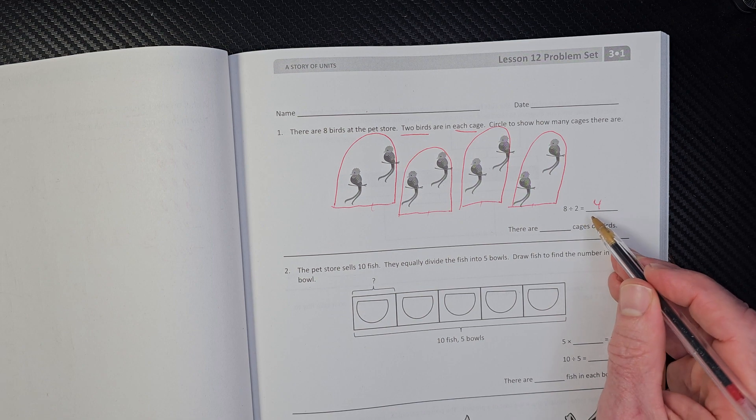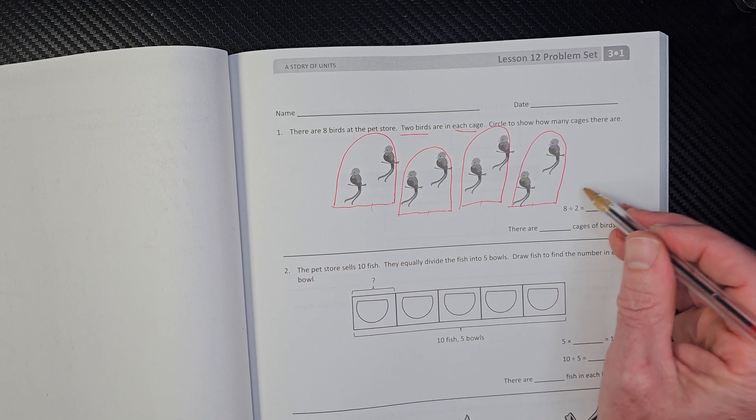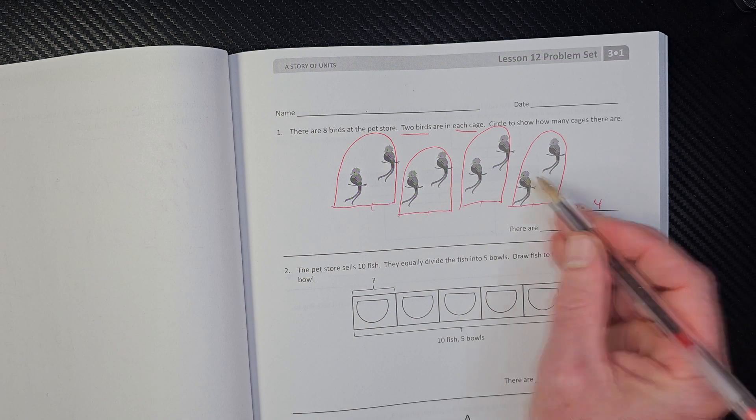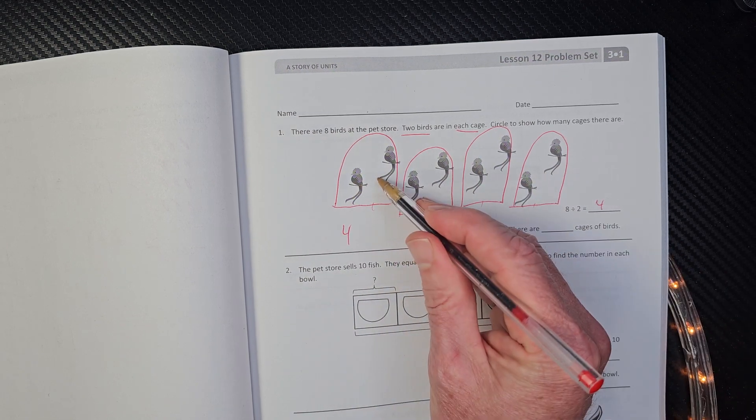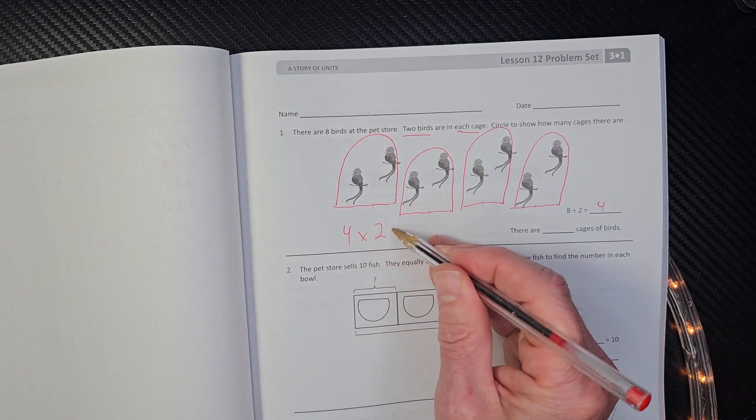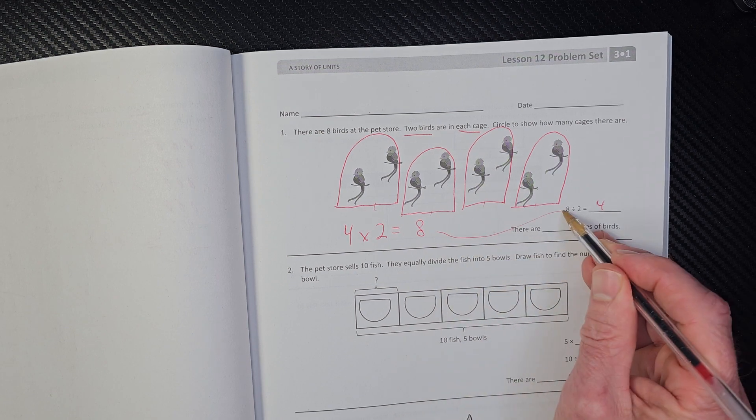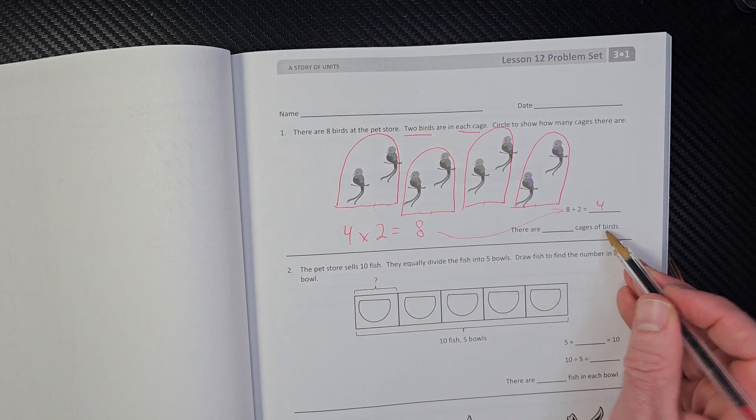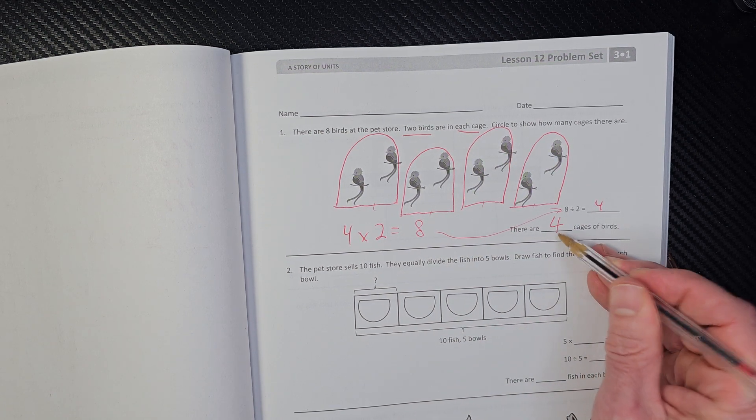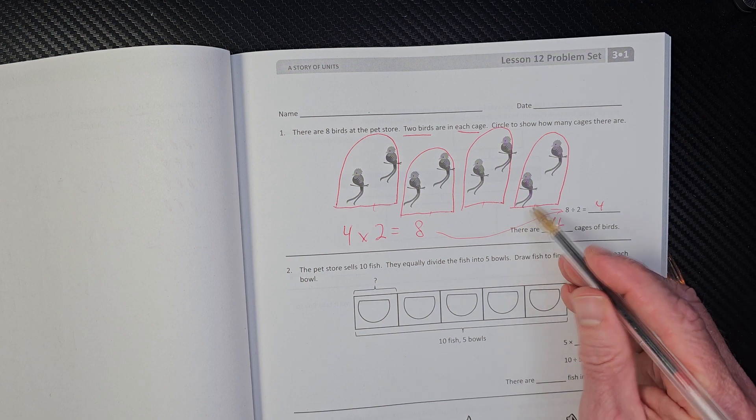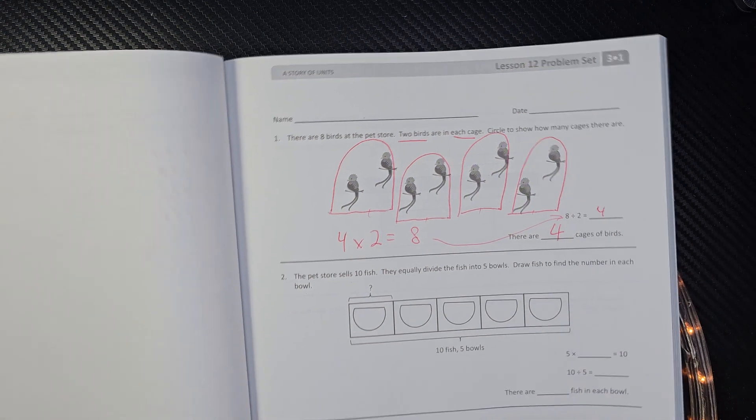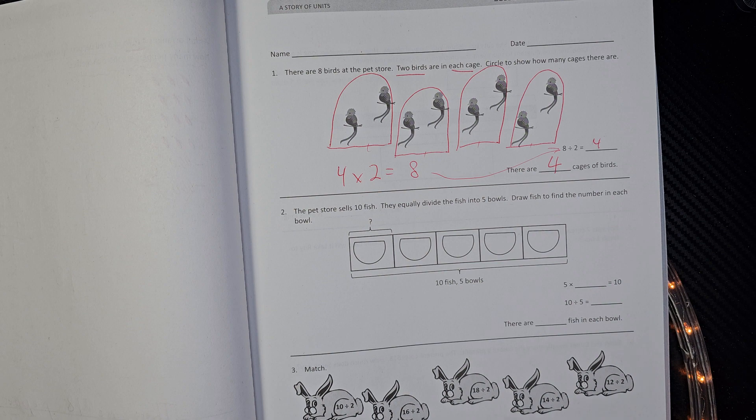So we have eight divided by two. So to find that, you would go one, two, three, four. Remember, division is the opposite of multiplication. So you would have how many groups? Four groups of two. And that would equal eight. There are blank cages of birds - four. Cuatro.